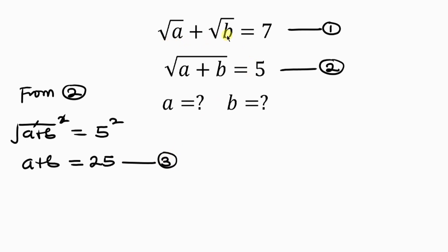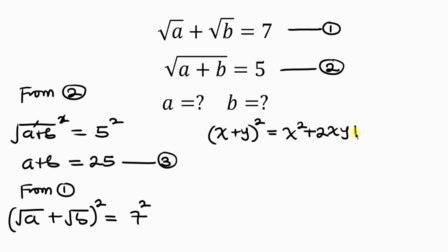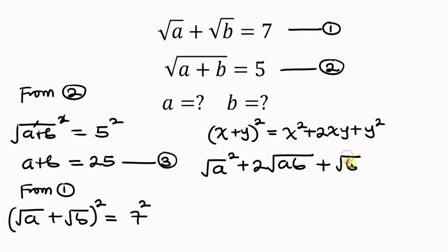Our next step will be to pay attention to equation 1. From equation 1, we have the square root of A plus the square root of B equal to 7. We also have to take the square of both sides. The left-hand side is of the form (X + Y) squared, which when expanded will be X squared plus 2XY plus Y squared. On expansion, we have the square root of A squared plus 2 times the square root of A times the square root of B, plus the square root of B squared.